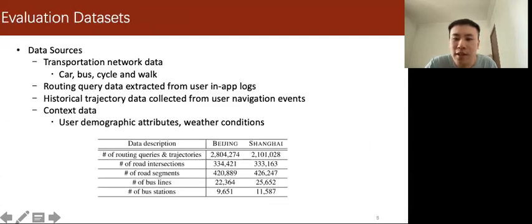What kind of data are we using? We use four types of data. First, the transportation network data. Second, the routing query data, which can be extracted from search user logs.